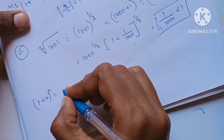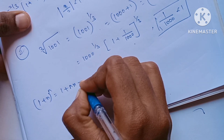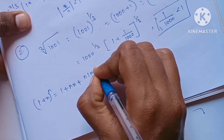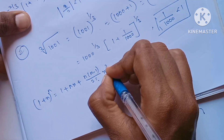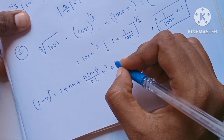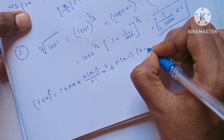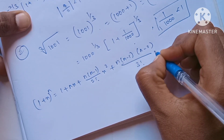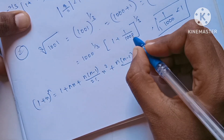First formula: (1 + x)^n = 1 + nx + n(n−1)/2! · x² + n(n−1)(n−2)/3! · x³ and so on.